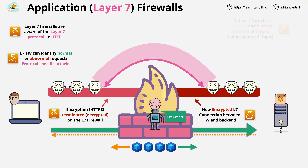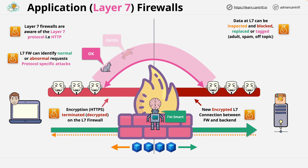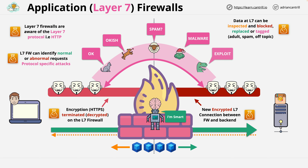Data at layer 7 can be inspected, blocked, replaced, or tagged. This might mean protecting against adult content, spam, off-topic content, or even malware. For example, you might logically allow cat pictures but be less okay with dogs, draw a line at other animals — sheep might be considered spam — or you might only block truly dangerous content such as malware and exploits. Because you can see and understand one or more application protocols, you can be very granular in how you allow or block content.